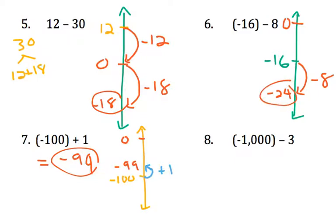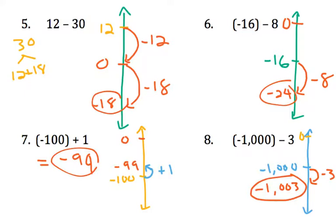Okay, and finally for number 8, this would be insane if you drew out every number, and it just helps to think about it. Here's negative 1,000. I know that 0 is going to be way up here somewhere. And then if we're subtracting, it means we're going down further into the basement. And if we're 1,000 floors away from 0, and we go down 3 more, now we're 1,003 floors away. So negative 1,003 is your final answer.